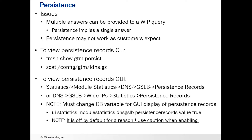You can also view the persistence records in the GUI by going to Statistics > Module Statistics > DNS > GSLB > Persistence Records, or DNS > GSLB > Wide IP > Statistics > Persistence Records. Note that you must change a DB variable in order to get the GUI to display persistence records. That DB variable is ui.statistics.module_statistics.dns.glb.persistence_records, and it needs to be set to true. Be aware that it's off by default for a reason — enabling it with a large number of persistence records can cause performance impacts on your machine, so use caution.